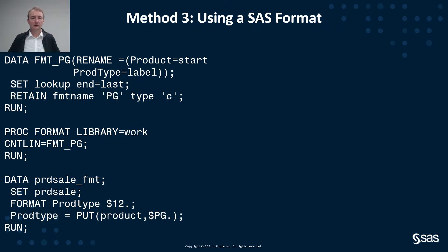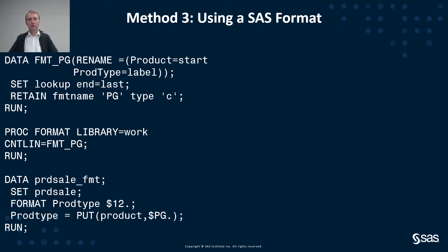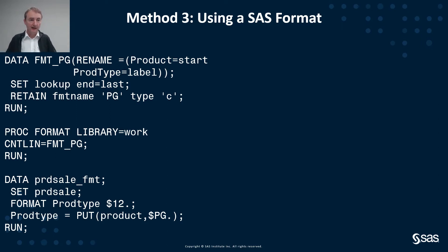Let's now look at method number three, which uses a SAS format. SAS formats are quite well-known because you can use longer text or labels for specific codes. For example, this could be using postal codes as a key and adding the city names as long text for analysis, without actually storing that long text in your table. You can also use a SAS format to apply a lookup table.